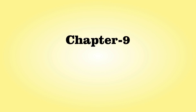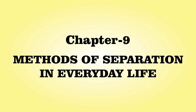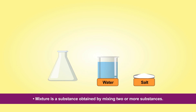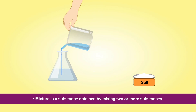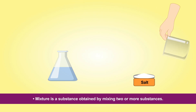Chapter 9: Methods of Separation in Everyday Life. A mixture is a substance obtained by mixing two or more substances.